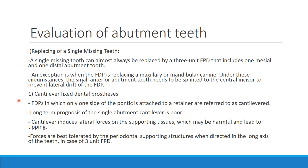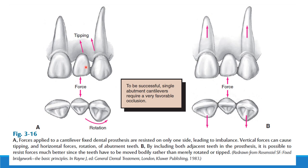Coming to cantilever fixed dental prostheses. Here, one side of the pontic is attached to the retainer and that is what is cantilevered. Long-term prognosis is poor and it would cause tipping — that's why it is a little harmful. You can see that replacing a lateral causes tipping and rotation when force is applied. However, when splinted to both sides, the forces are less.